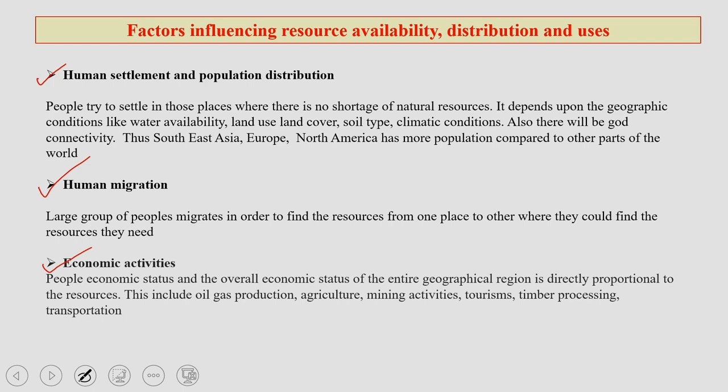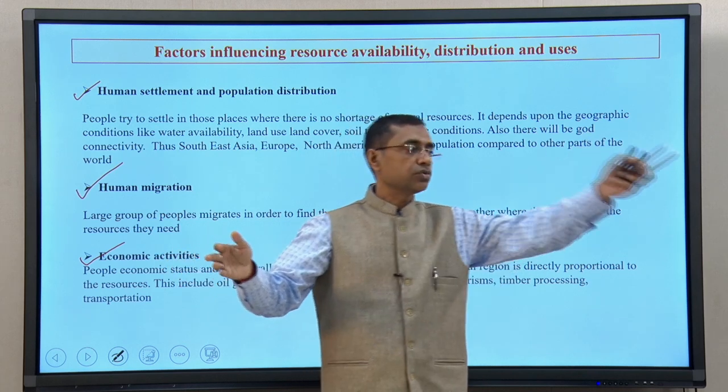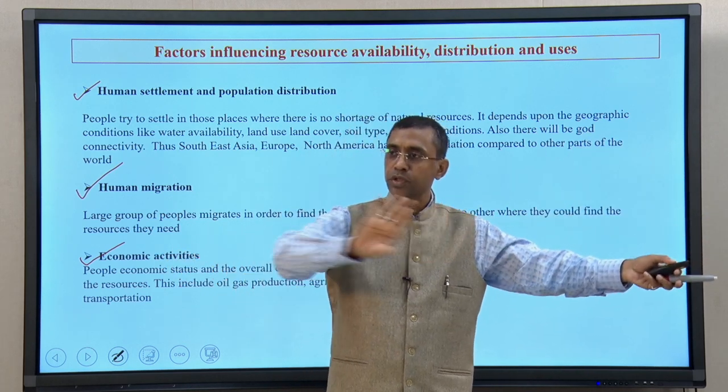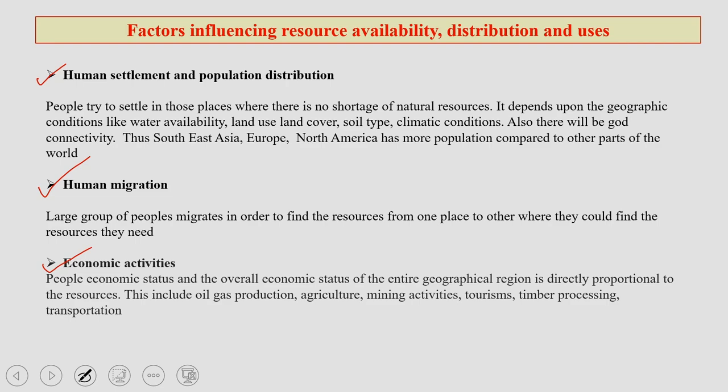For example, resources like oil, coal, good soil, agricultural areas, tourism, availability of timber, and good roads — all these things actually encourage economic activities. When economic activities are much higher in one place compared to another, certainly people will move towards that area where the economic activities are much higher.